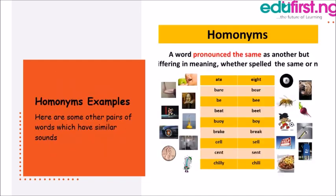So let's have a quick look at some pairs of words that have similar sounds. The first here is 'ate' as in A-T-E and 'eight' as in E-I-G-H-T. You would notice that both words have the same pronunciation — they sound alike — but they have different spellings and different meanings. That is a typical example of what we refer to as homonyms.